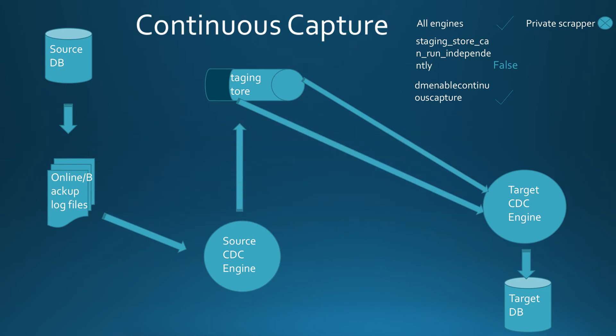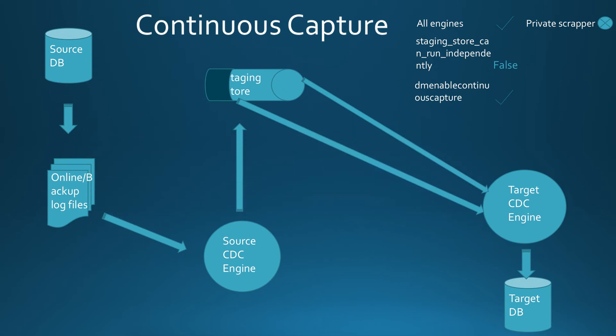Should the InfoSphere CDC instance be stopped normally, the single scrape staging store is persisted to disk. When starting the instance again, the continuous capture is automatically restarted and continues from the last transaction log entry. However, abnormal termination of the InfoSphere CDC instance renders the staging store corrupted, so there is no persistence guarantee.